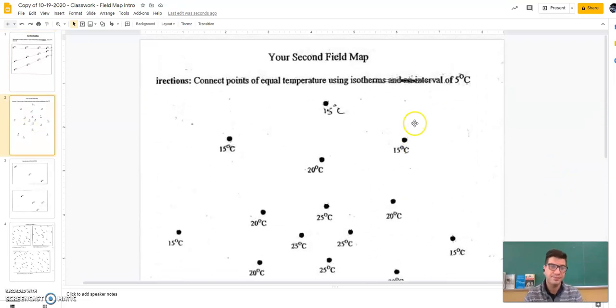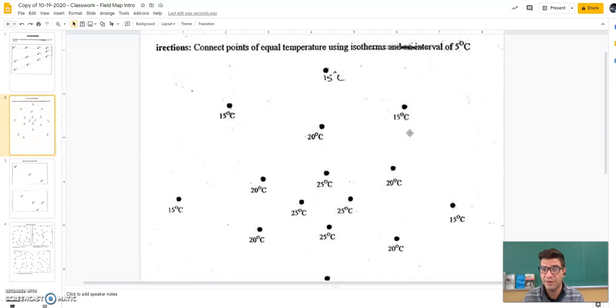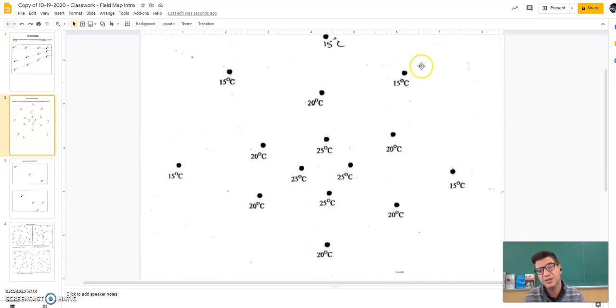Let's take a look at the next one. It says, connect points of equal temperature using isotherms and an interval of five degrees C. So, you'll notice I've got a bunch of 15s along the outside. I've got 20s in the middle section and then 25s in the very dead center. If you go back to our rules, you'll remember that you need to either go off the page or you need to end in a complete circle.